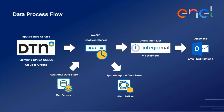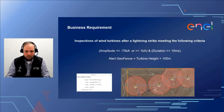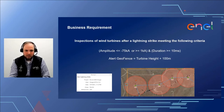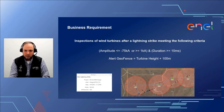Our ArcGIS GeoEvent Server is monitoring that feed coming from DTN, along with the geo-fences of the particular turbines we are monitoring from our relational data store. You can see those red circles around each wind turbine—those are the alert areas for a critical lightning strike. That's the turbine tip height plus 100 meters, which is the spatial accuracy of the lightning data supplied by DTN. So there's a pretty high probability that if a lightning strike took place inside that radius, it hit the wind turbine.